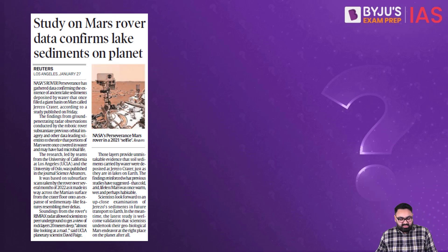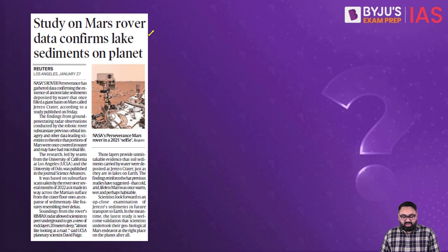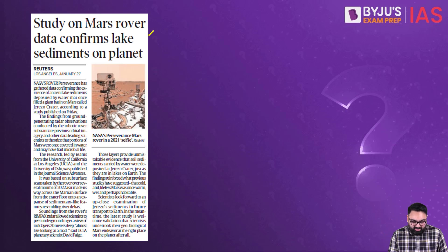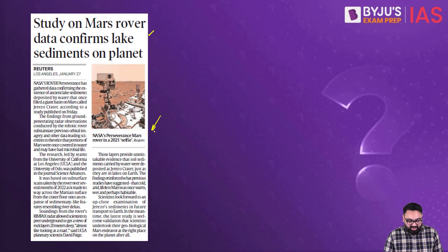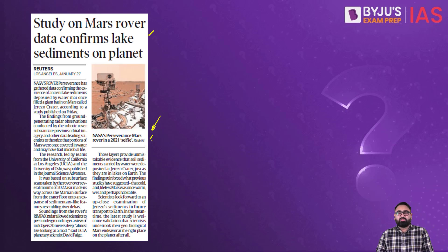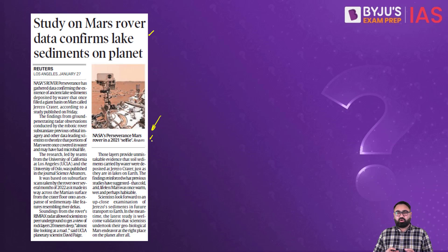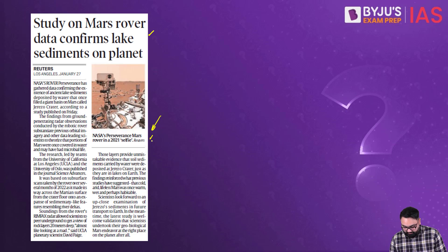The reason we are discussing this is that a study on Mars rover data has confirmed that there are lake sediments on the planet. The data has been collected by NASA's Perseverance Mars rover. That is how we have now come to the conclusion that there used to be a lake on Mars.